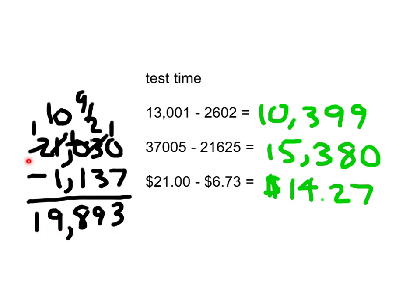This is our difference. 21,030 minus 1,137 equaling 19,893. Regroup across zeros, step by step by step. Always going from one neighbor to the next. That's subtraction with regrouping across zeros.